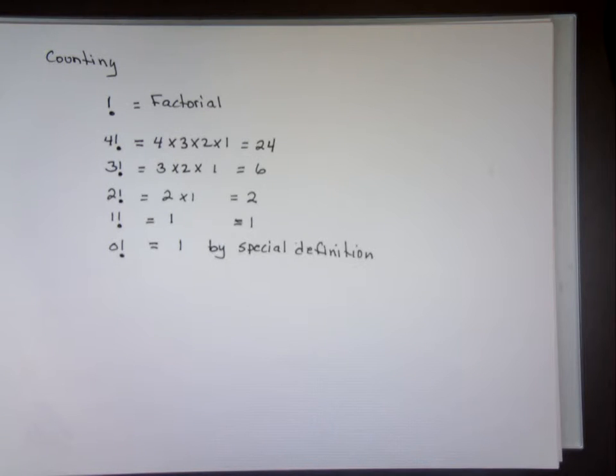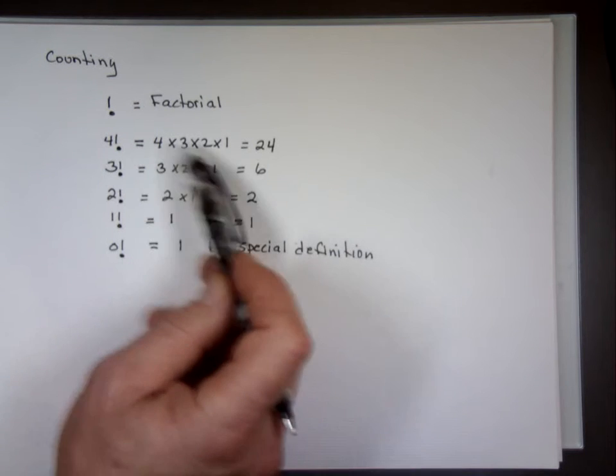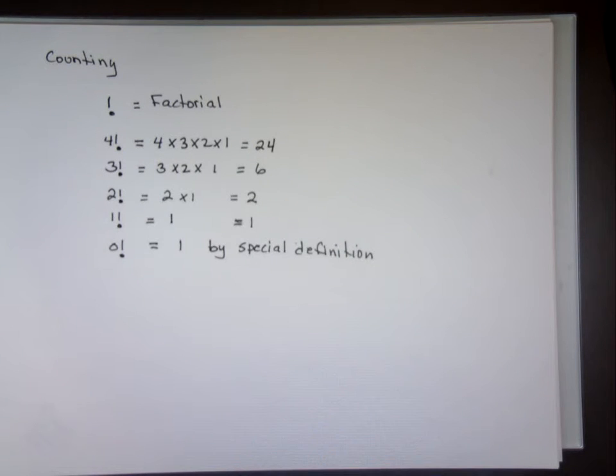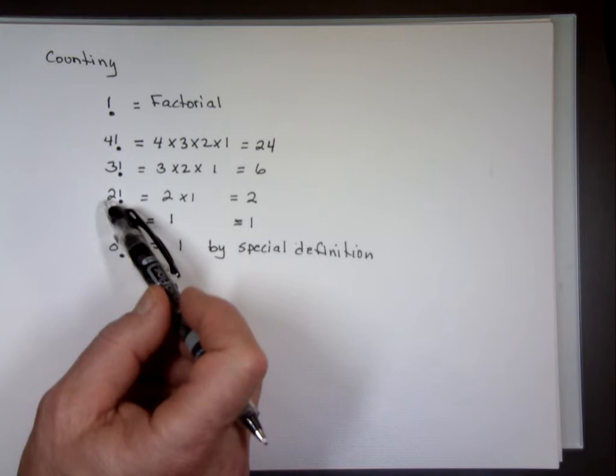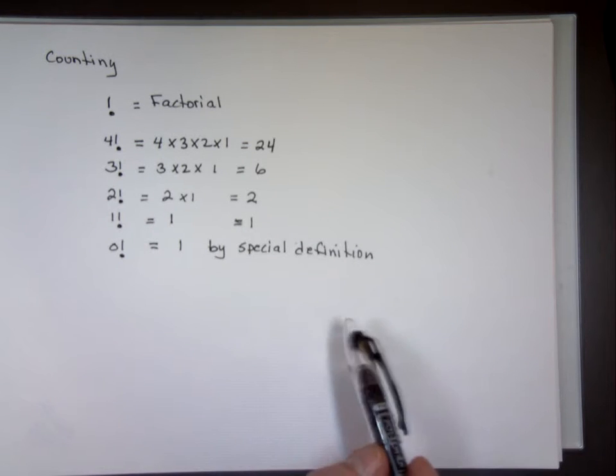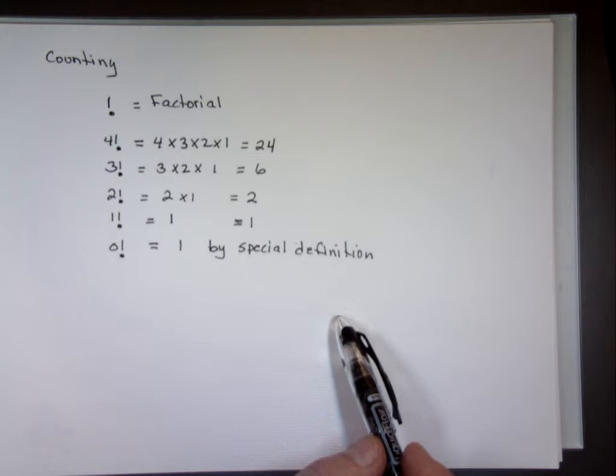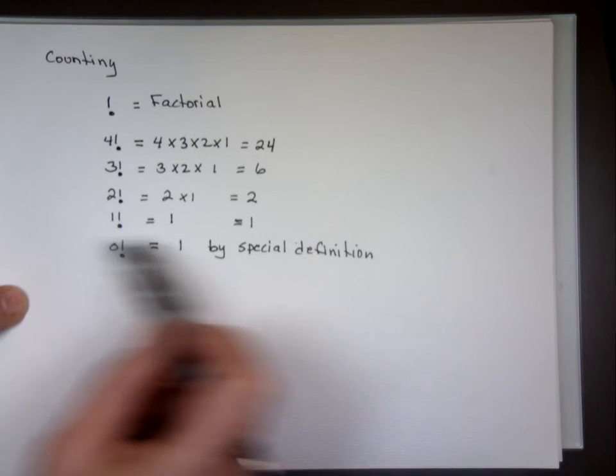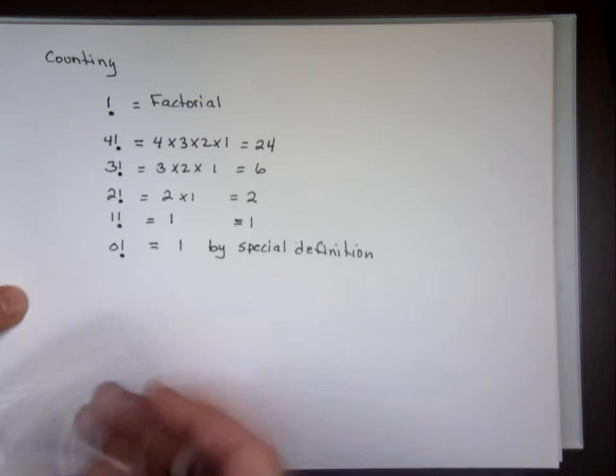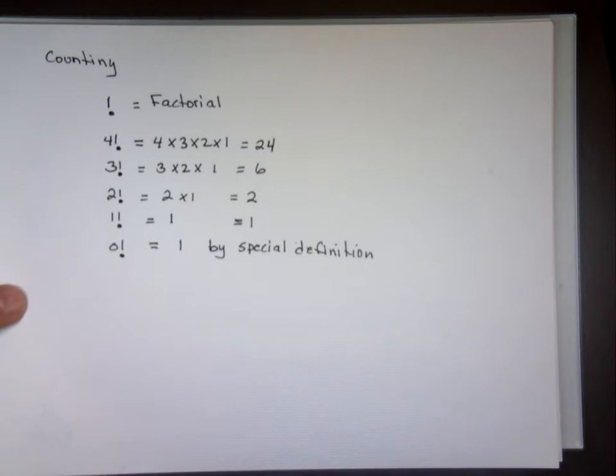Okay, back to factorial. So 4 factorial is 4 times 3 times 2. You always start with the number and keep going down each time until you get to 1. 3 factorial is 3 times 2 times 1. 2 factorial is 2 times 1. 1 factorial is 1. 0 factorial is 1. Try not to make sense out of this - it doesn't fit the format, but that's the definition. You can't take the factorial of a negative number.